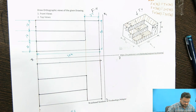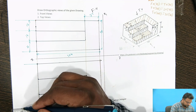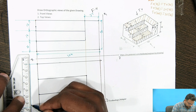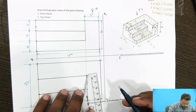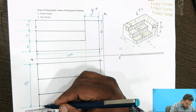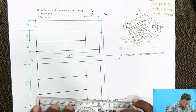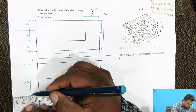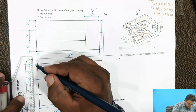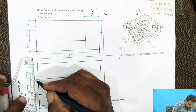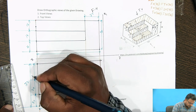Now we have to mention the dimensions. From this to this is 72mm — the height of the top view. And 104mm is the base. The 24mm blocks: from this to this is 24mm. Here also we have drawn 24mm blocks — three blocks of 24, 24, and 24.